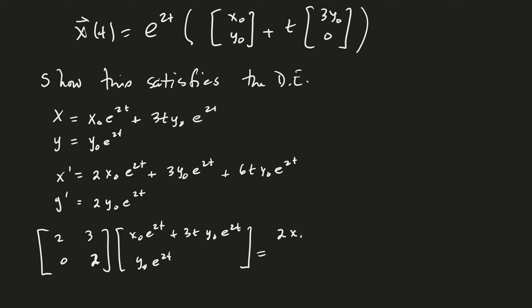Let's see, that's going to be 2x0 e to the 2t. Just multiply it out. Nothing special going on here. So 2 times the first one plus 3 times the second and then we have our 2 times our y0 e to the 2t. And what do you know? I think we have the same thing. So there you go.